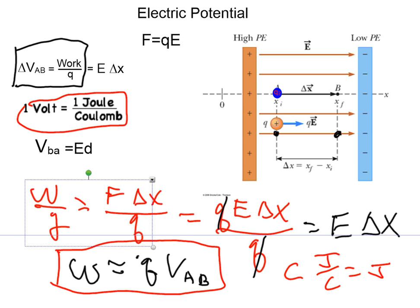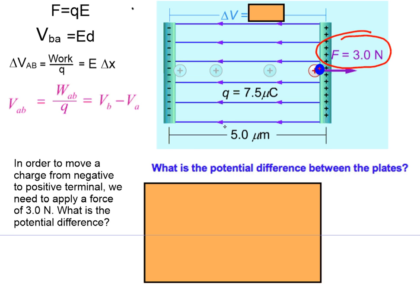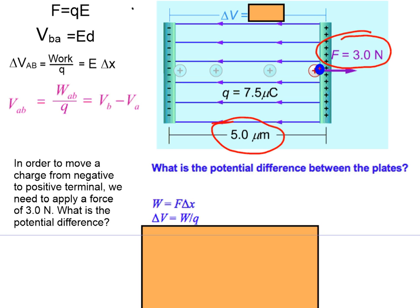Let's see how you would use this in a particular problem. Say we have a capacitor with an electric field between the plates. We have to apply a force to move a charge from one place to another, and the work equals the force we apply times the distance. We can calculate the potential difference as the electric field times Δx. The potential difference ΔV will be the work divided by the charge that we move, with a separation of five micrometers.